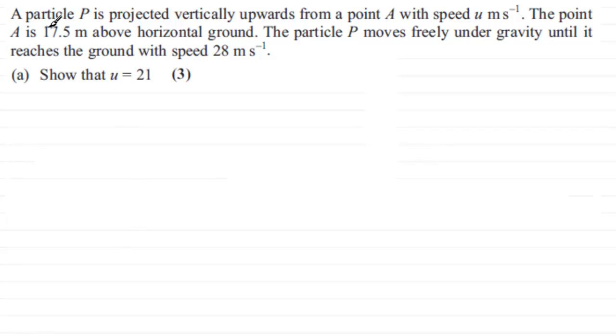Okay, we've got this particle P projected vertically upwards from a point A with a speed of u meters per second. The point A is 17.5 meters above the horizontal ground, and the particle P moves freely under gravity until it reaches the ground with a speed of 28 meters per second. We've got to show that u equals 21.